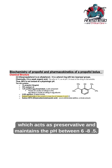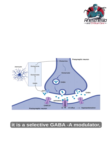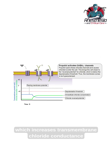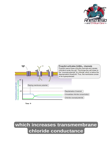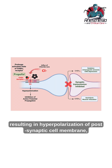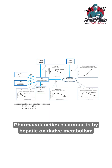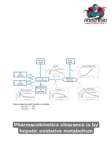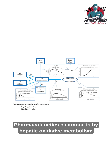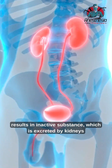It also has sodium hydroxide, which acts as a preservative and maintains the pH between 6 to 8.5. The mechanism of action of propofol is that it is a selective GABA modulator, which increases transmembrane chloride conductance, resulting in hyperpolarization of the post-synaptic cell membrane, leading to functional inhibition of the cell membrane.